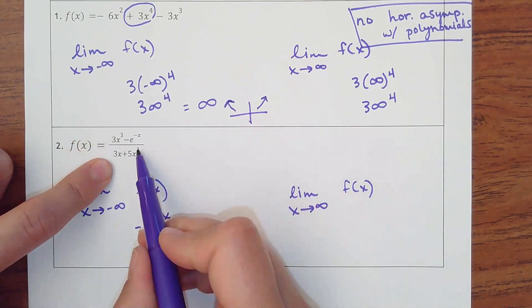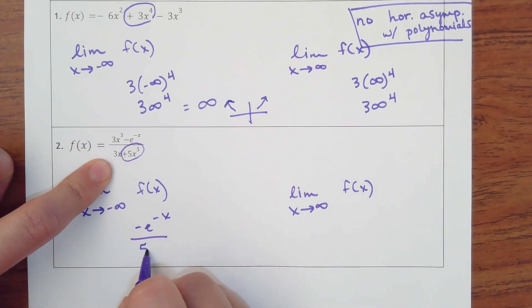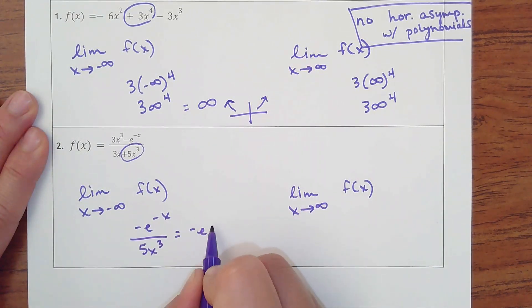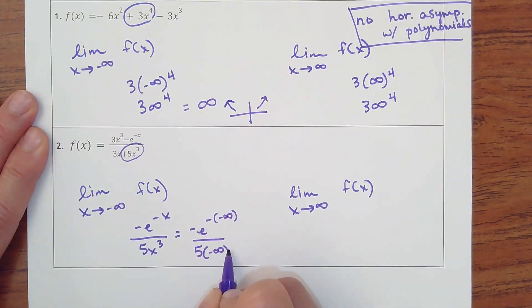Okay, on the bottom, obviously, 5x cubed is what I'm going to use. Okay, so then I'm going to plug in my infinity. I already said that that becomes positive.